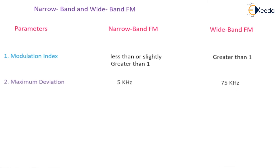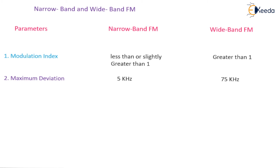The second parameter is maximum deviation. For Narrowband FM, the maximum deviation allowed is 5 kilohertz, whereas Wideband FM allows a maximum deviation of 75 kilohertz.